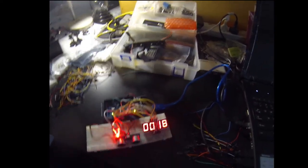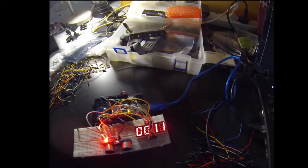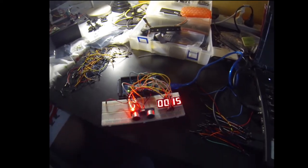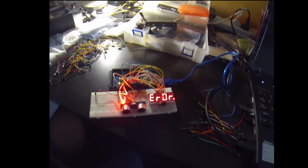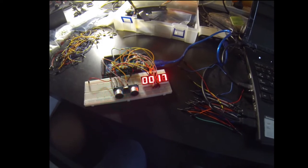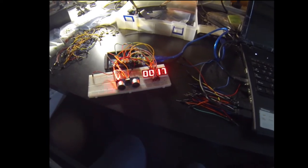Basically, I have made it so that the 4x7 segment display displays the distance that the sonar module is reading. Now I purchased this module separately, but I mean it's an analog one so it should work fine.